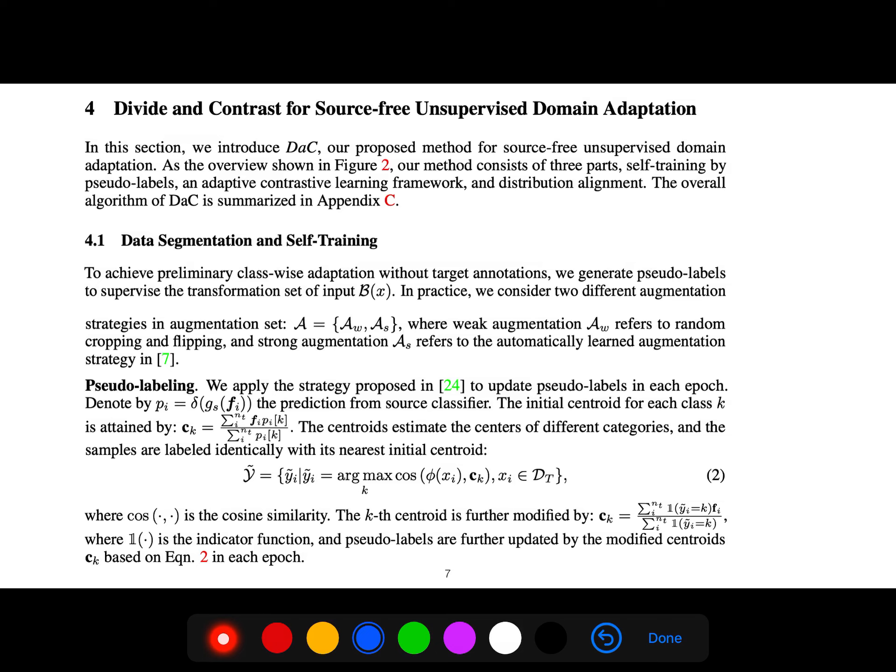To achieve preliminary class-wise adaptation without target annotations, we generate pseudo-labels to supervise the transformation set of input B(x). In practice, we consider two different augmentation strategies: weak augmentation (random cropping and flipping) and strong augmentation (automatically learned augmentation strategy).